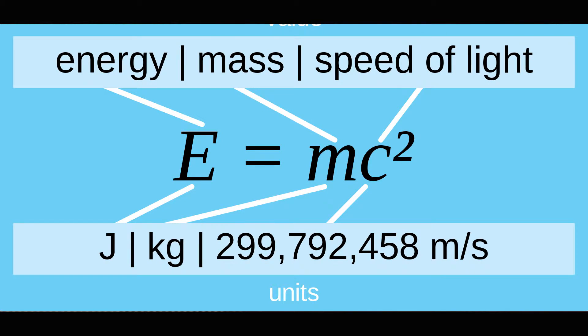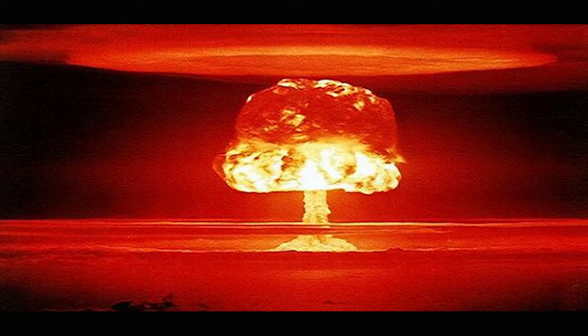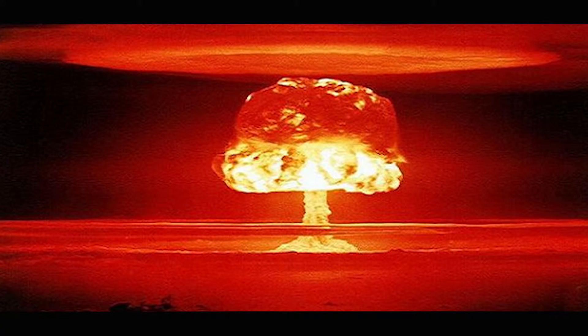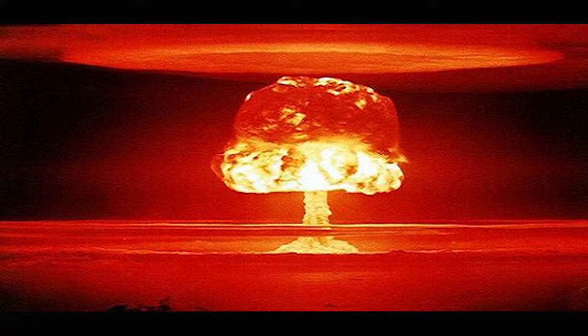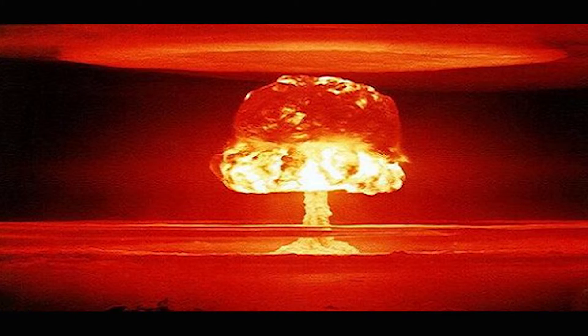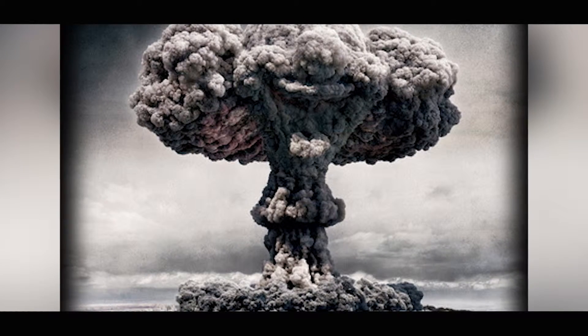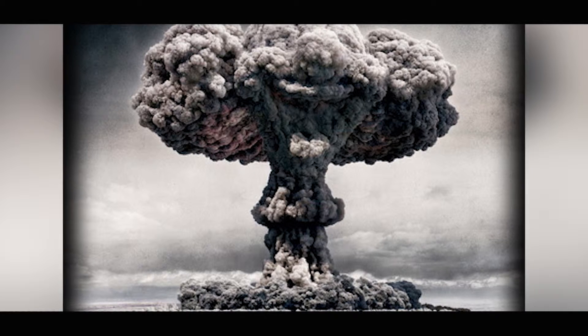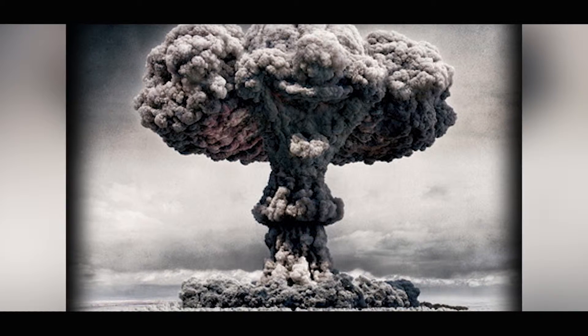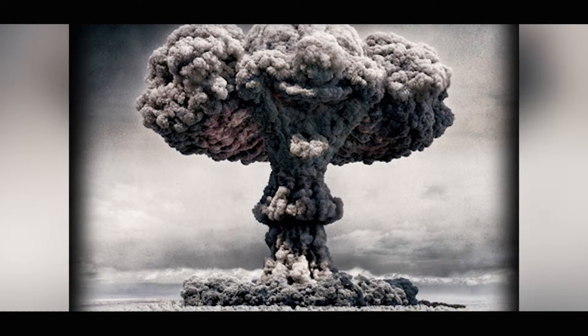Basically what this is saying is that matter can be converted into energy. That being said, one tiny little piece of matter times the speed of light squared — which is a massive number — can be turned into energy. So one little tiny piece of matter gets turned into tons and tons of energy, which is why the nuclear bomb was developed. I chose to use a nuclear bomb not because Einstein invented it, but because it was a better physical representation of E equals MC squared.